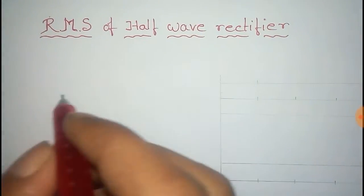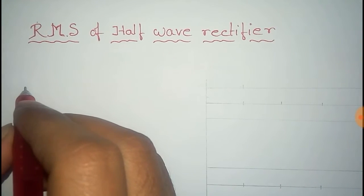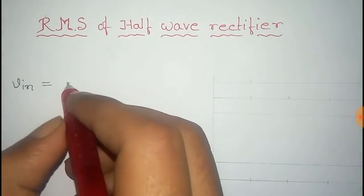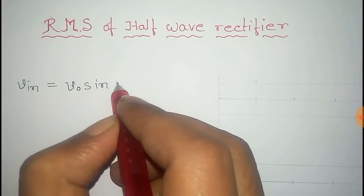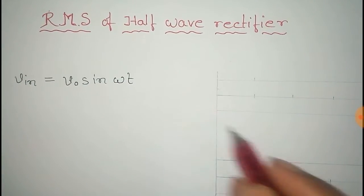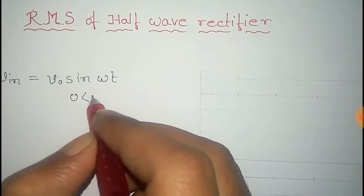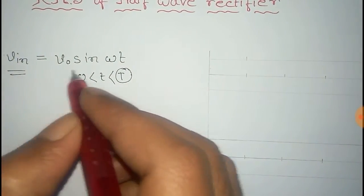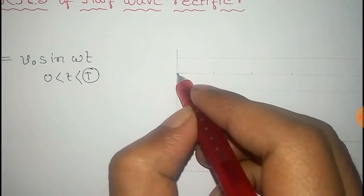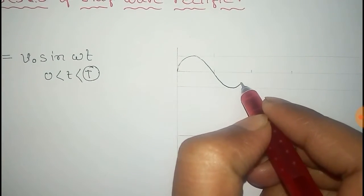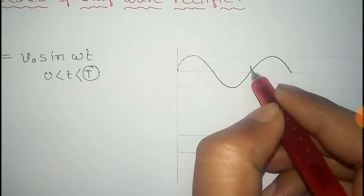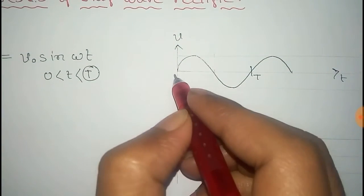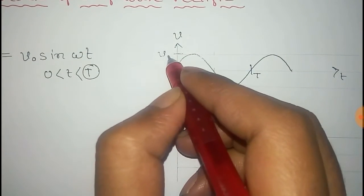In this video we'll find the RMS value of a half-wave rectifier. The input signal is given by V_in = V₀ sin(ωt), and the range of the signal is 0 < t < T, where T is the time period. If we plot this input signal with time, we get a plot with the voltage axis, time axis, initial point zero, and peak voltage V₀.